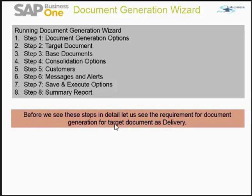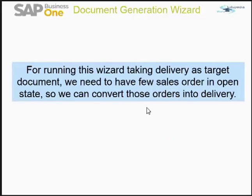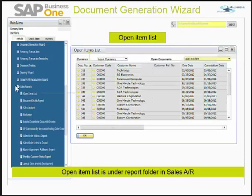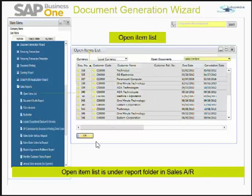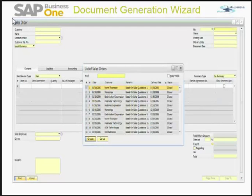Before seeing these steps in detail, let us look at the requirements for document generation with Delivery as the target document. We need to have a few sales orders in open state so we can convert them into deliveries. There is an Open Item List report found in Sales Reports. I have selected Sales Order as my filter, and you can see all the sales orders currently in open state in our system.